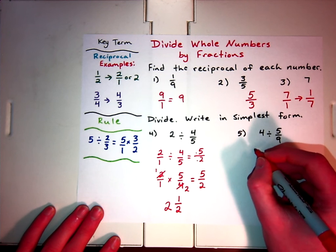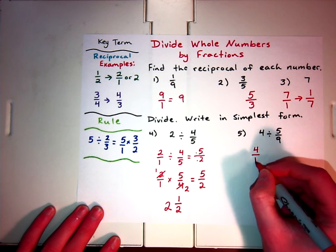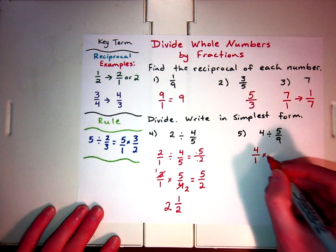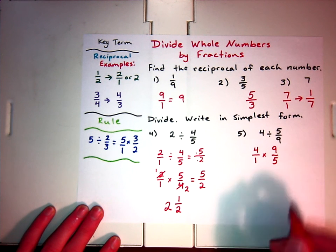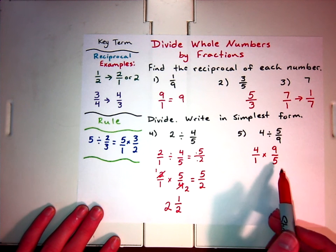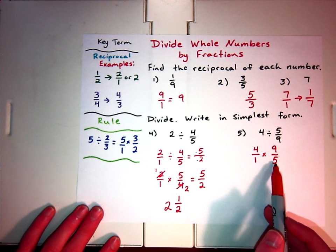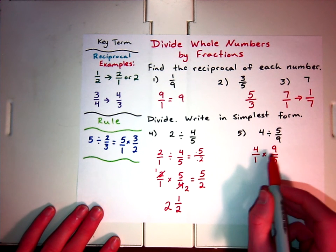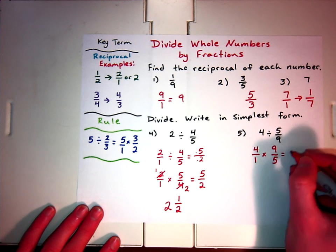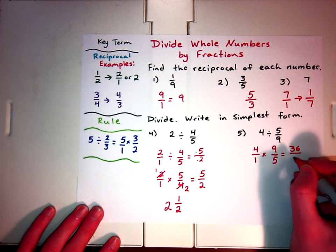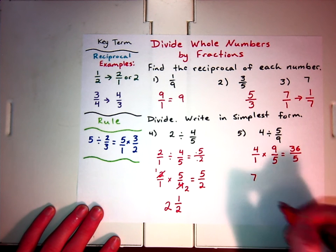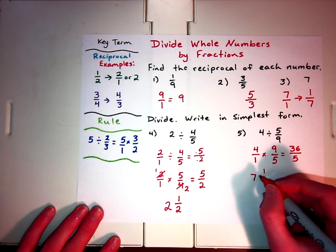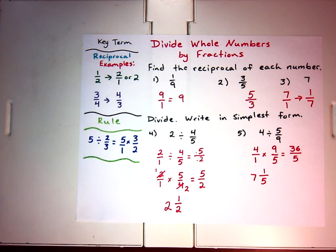Over here we have 4. Let's do 4 over 1 divided by 5 ninths. I can turn it into a multiplication problem by finding the reciprocal. I get 9 over 5 as my reciprocal. I could look and see are there factors across, but there are not. 4 and 5 don't have a common factor. 9 and 1, there's no factor that will simplify them. So 4 times 9 is going to get us 36, and 1 times 5 is going to get us 5. 5 goes into 36 seven times. 7 times 5 is 35, so we would have 1 remainder, and our denominator remains the same. So those are some of the things you need to know when dividing whole numbers by fractions.